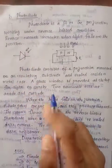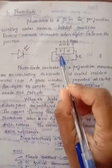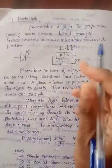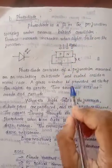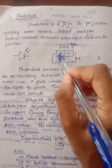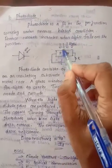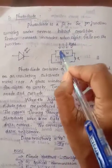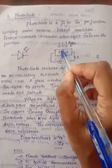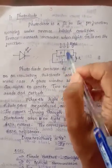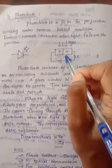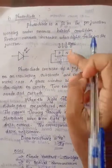The photo diode consists of a PN junction enclosed in a metal case. A glass window is provided so that light energy can enter into this PN junction diode.